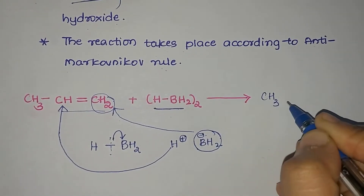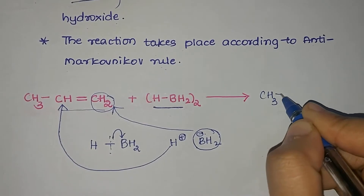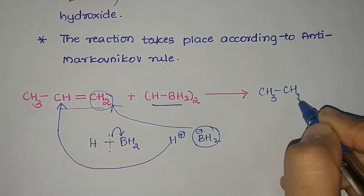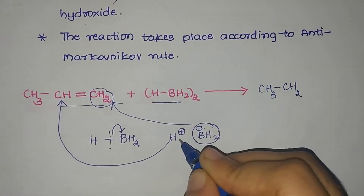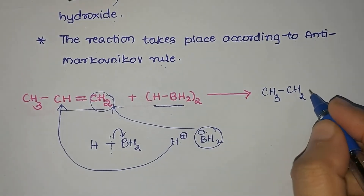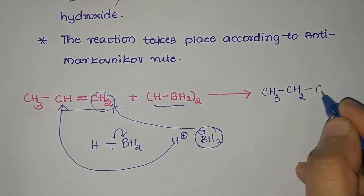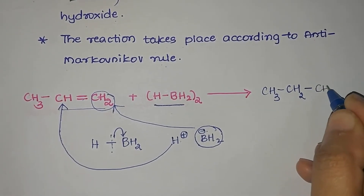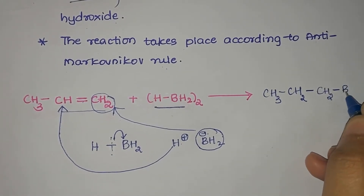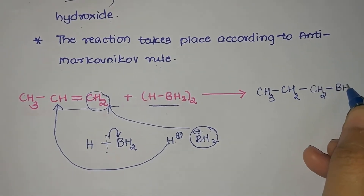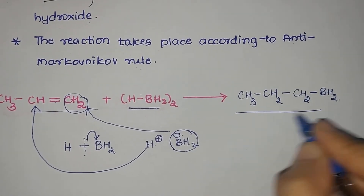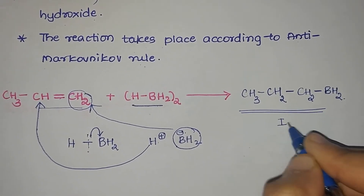This is opposite to Markovnikov rule, where bonding occurs at the carbon having lesser number of hydrogen atoms. Here it bonds to the carbon having the greater number of hydrogen atoms, that is the doubly bonded carbon. The resulting product is CH3–CH–CH2, where one H is added making it CH2, the double bond becomes single, and BH2 gets attached. This is the product obtained in step one.